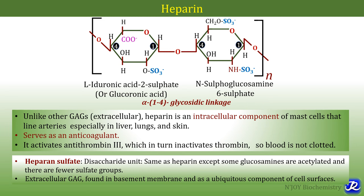The difference between heparin and heparan sulfate: heparan sulfate has the same disaccharide unit as heparin, consisting of iduronic acid and N-sulfoglucosamine, except that some glucosamines are acetylated and there are fewer sulfate groups. It is extracellular, unlike heparin. It is found in the basement membrane and is a ubiquitous component of cell surfaces.